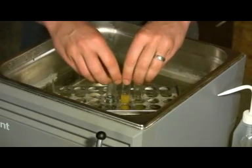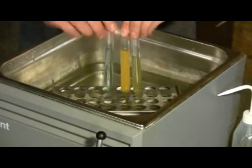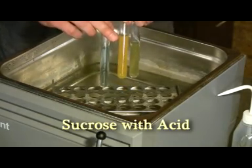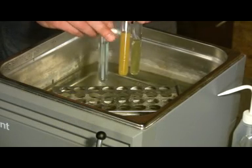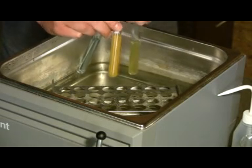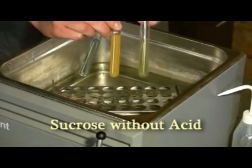So we did the Benedict test with non-reducing sugar. As you can see, this is a control with water, so no reaction. Here, this is the test tube with sugar and hydrochloric acid. So at the end, you get a reaction because you broke down the disaccharide into glucose and fructose. And that one is basically sugar, so sucrose, with no hydrochloric acid.